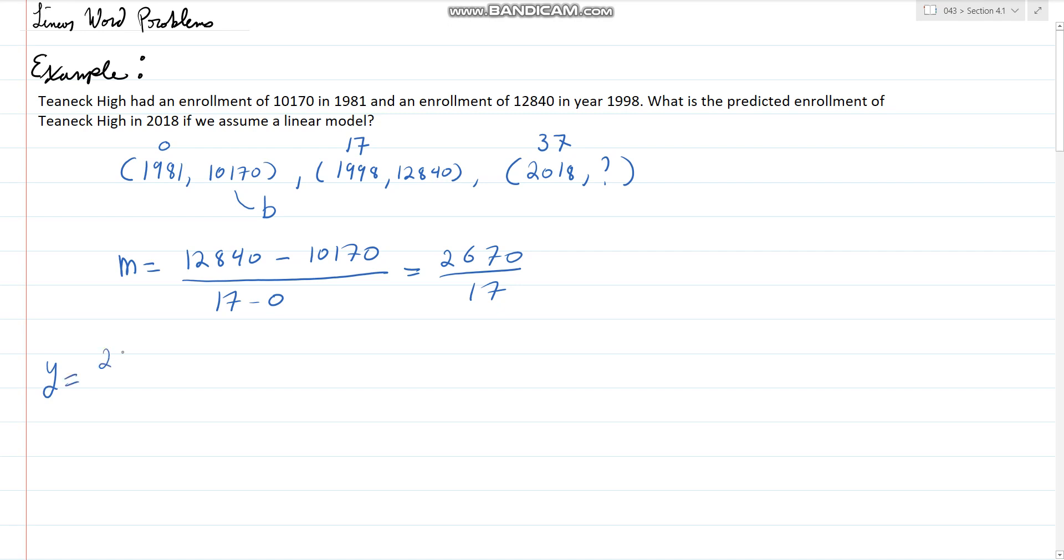So y equals 2,670 over 17 times x plus 10,170. Now we can plug in the information for 2018. So I'll say f of 37 equals 2,670 over 17 times 37 plus 10,170. I found that comes to approximately 15,981.17647. We need to round to the nearest student, so I'm going to say 15,981. That would be my final answer for enrollment.